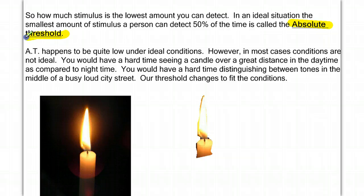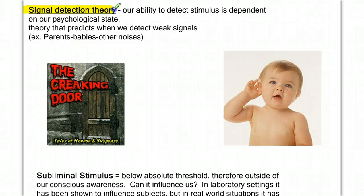So, our first term is absolute threshold. Our next term is called the signal detection theory, and this relates because we said that our ability to detect stimulus is dependent. Well, it's not only dependent on the other environmental conditions, but it's also dependent on our psychological state.